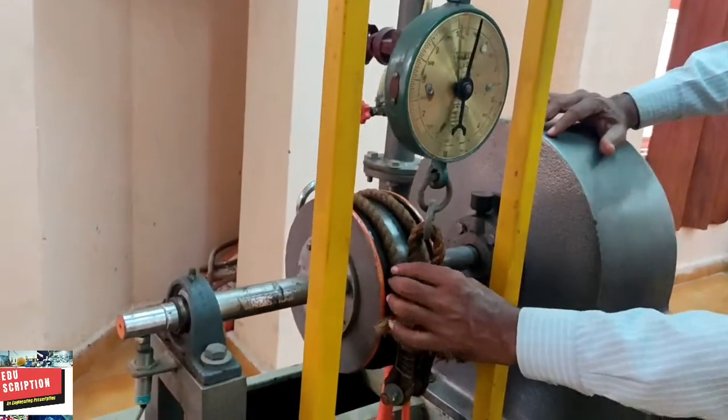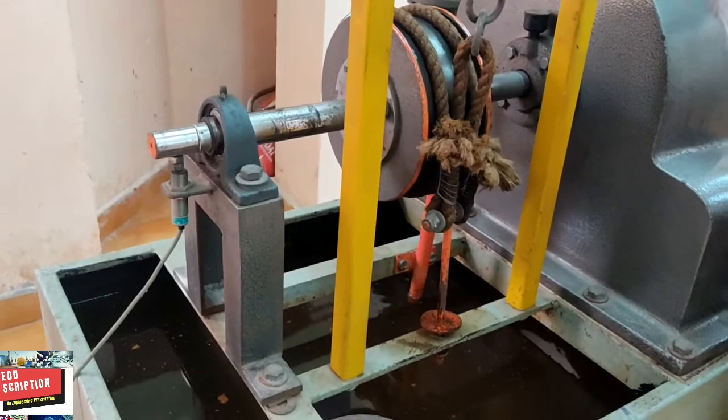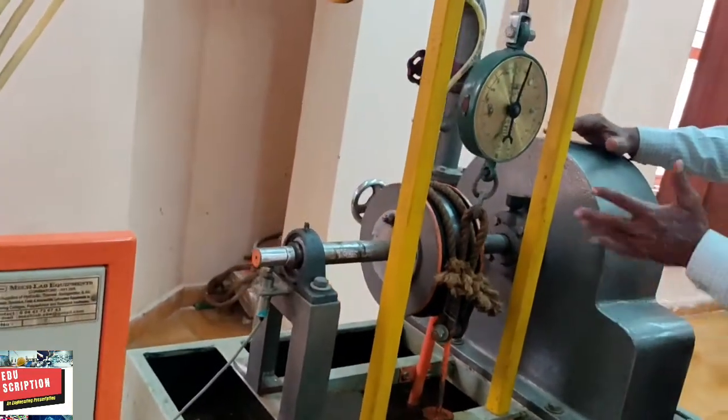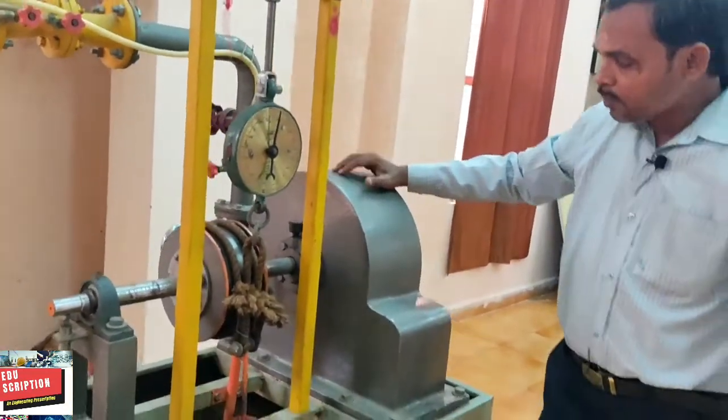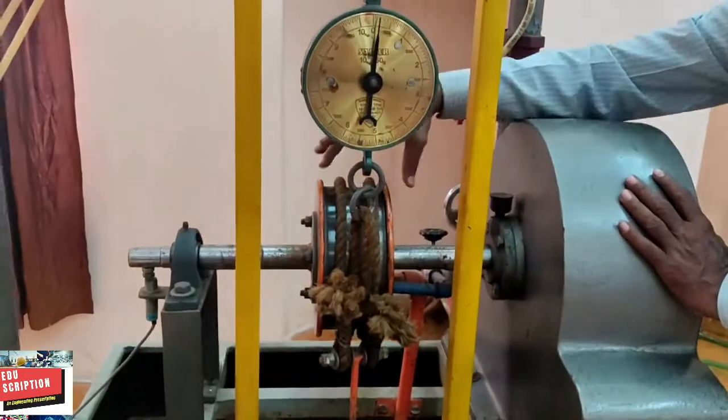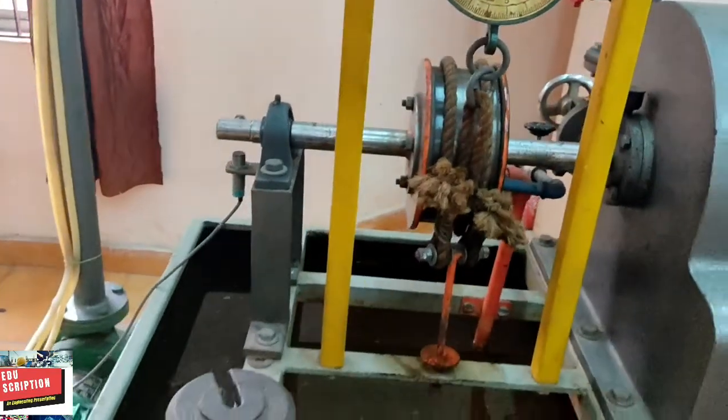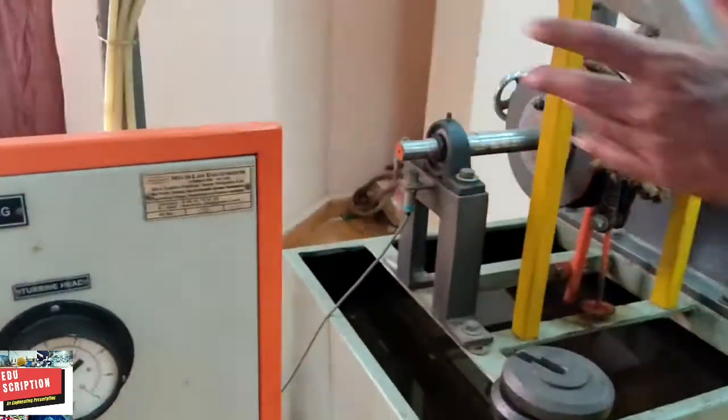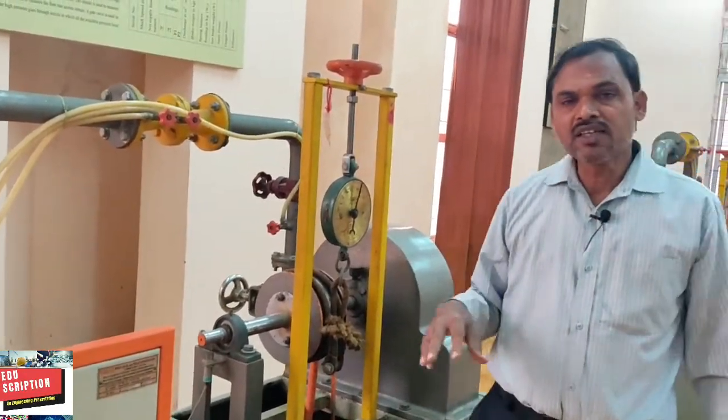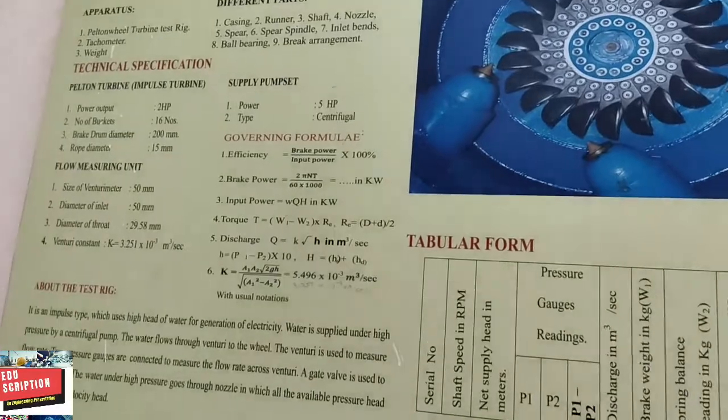Through this rope arrangement, we give weight here, and the opposite part is the spring weight. From this dead weight and spring weight we find out the torque. Similarly, this part, when we open this, automatically water will supply to cool this brake drum. This is the total arrangement. When this shaft rotates, it is connected with another generator, then it will produce electricity. This is the basic thing of a turbine.